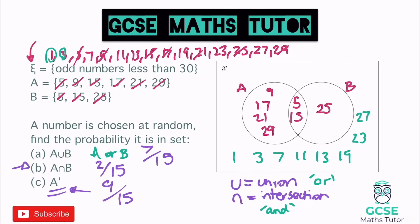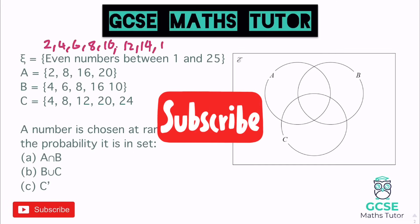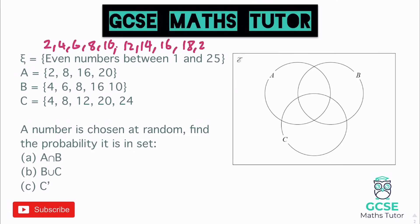Now let's look at one with three circles. We've got the same sorts of symbols but A, B, and C to fill in, plus some probability questions. The universal set here is the even numbers between 1 and 25, so let's write those down: 2, 4, 6, 8, 10, 12, 14... It's a bit annoying writing them all down, but it's better to do this easy task than to miss numbers and get it wrong.